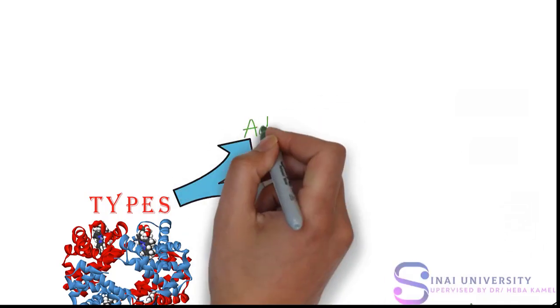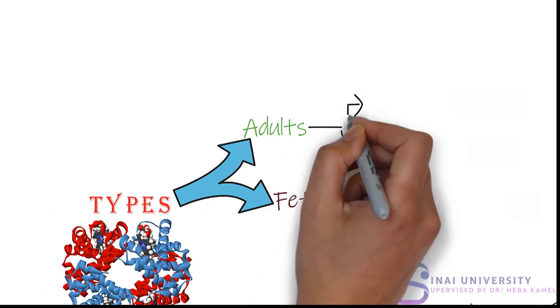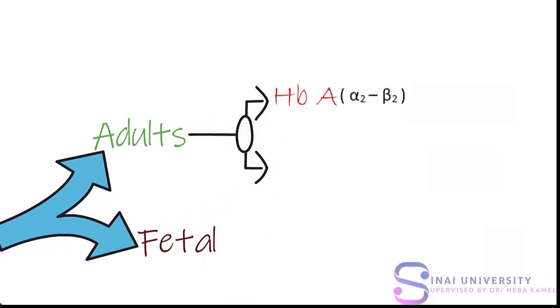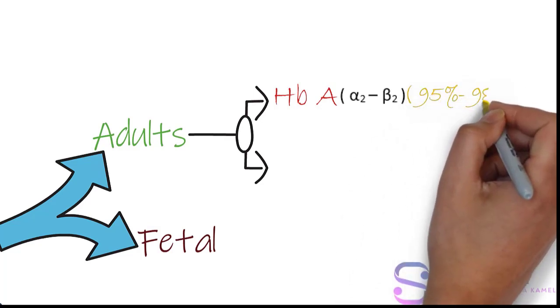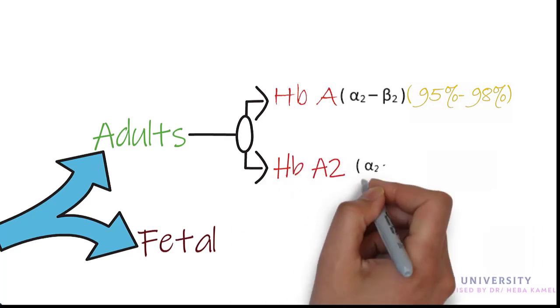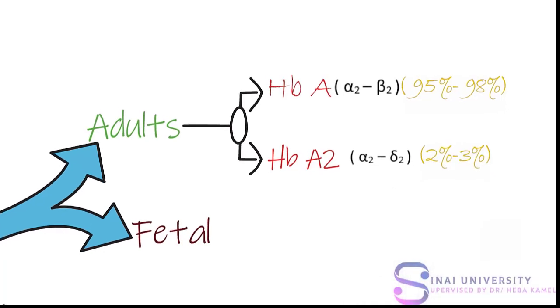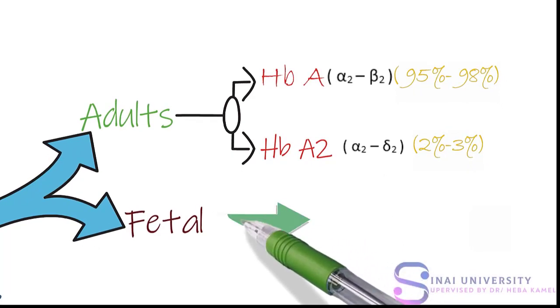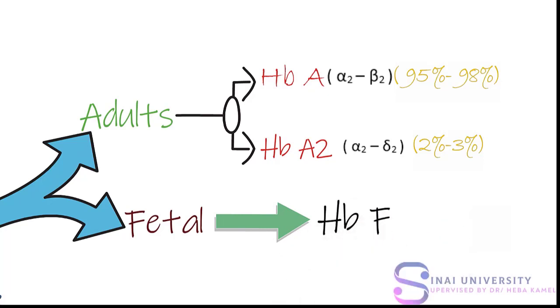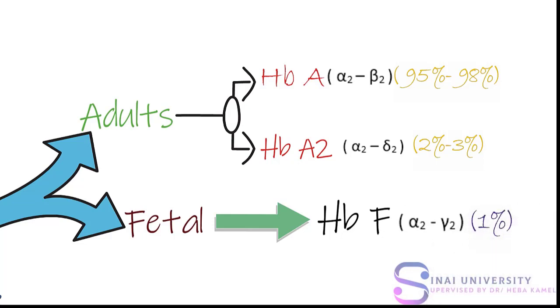There are three types of hemoglobin: two in adults and one in fetal. Normal adults have hemoglobin A (alpha 2 beta 2), which comprises 95 to 98%, and hemoglobin A2 (alpha 2 delta 2), which comprises 1 to 2%. Normal fetal hemoglobin is hemoglobin F (alpha 2 gamma 2), which is found in adults in 1 percent.